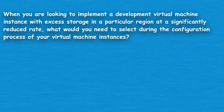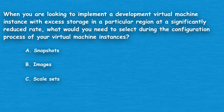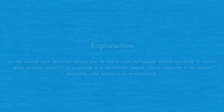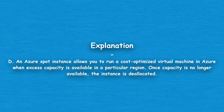The next question: when you are looking to implement a development virtual machine instance with excess storage in a particular region at a significantly reduced rate, what would you need to select during the configuration process? Option A: Snapshots. Option B: Images. Option C: Scale Sets. Option D: Spot Instances. The correct answer is Option D, Spot Instances. An Azure Spot instance allows you to run a cost-optimized virtual machine in Azure when excess capacity is available in a particular region. Once capacity is no longer available, the instance is deallocated.